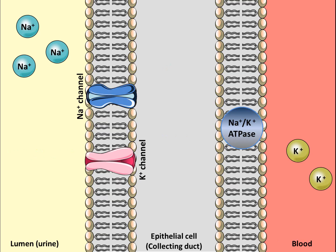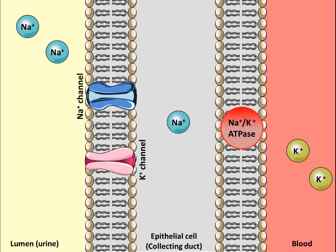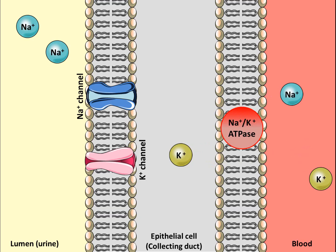Moving down to the collecting duct, now that there is a greater amount of sodium in the filtrate, more sodium proportionally can be reabsorbed into the collecting duct epithelial cells through the sodium channel, increasing the amount of sodium within the epithelial cells and the collecting duct, leading to an exchange of sodium and potassium at these sites through the ATPase pump, exchanging potassium into the epithelial cell at the collecting duct.